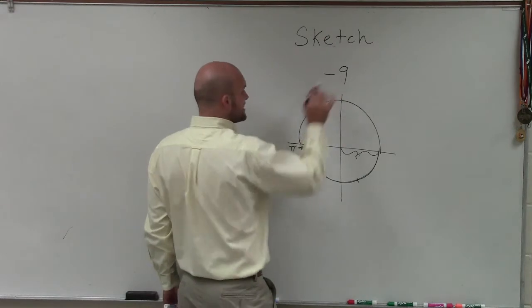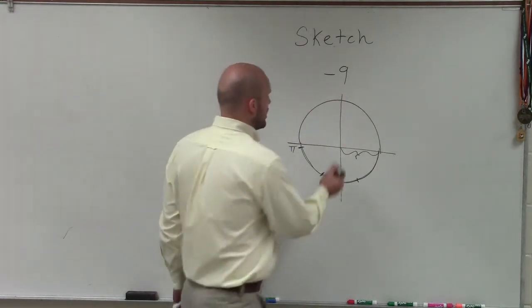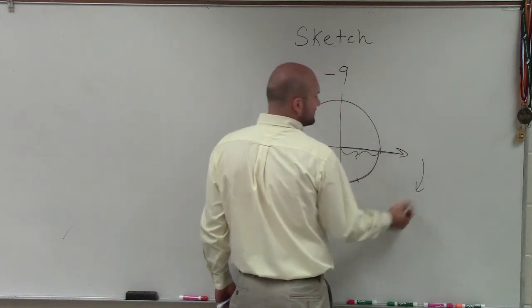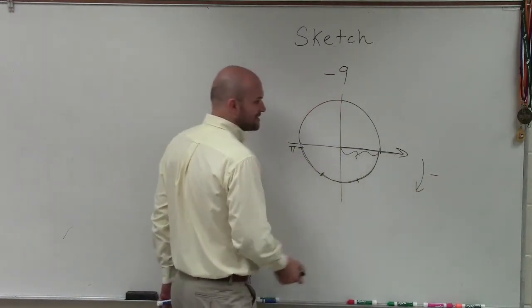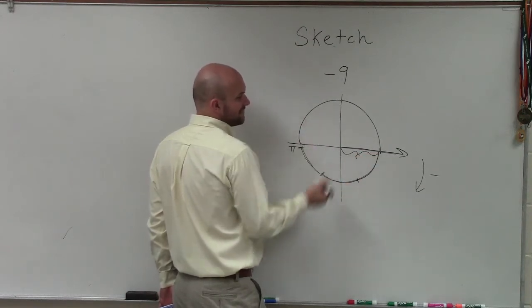But what they want to say is, where is the angle at negative 9 radians? Well, remember, we always start at our initial side. And if we're going in a negative direction, that's going to be clockwise. So that's why I started counting the radians in the negative direction.